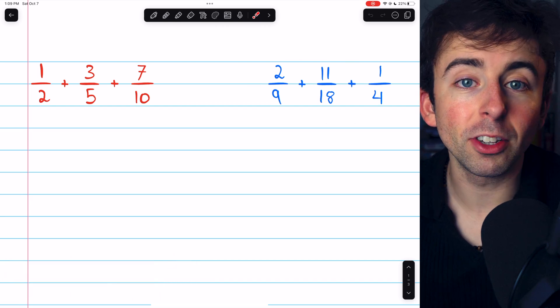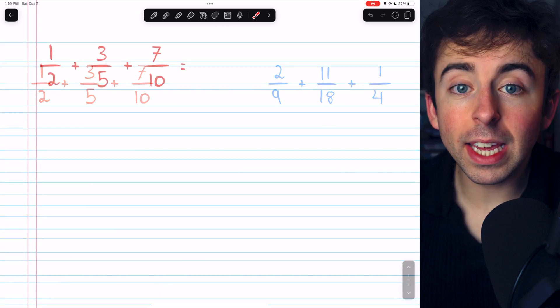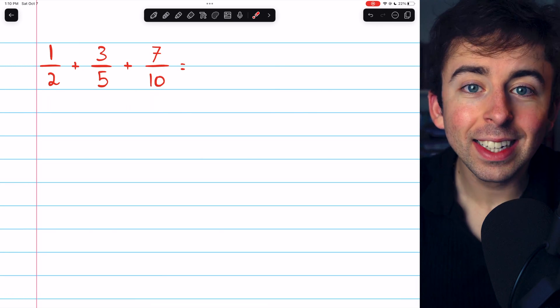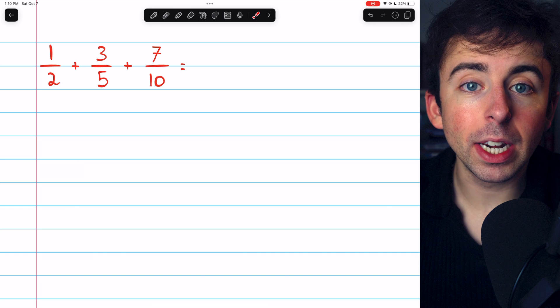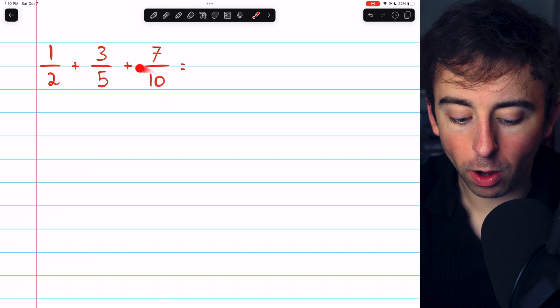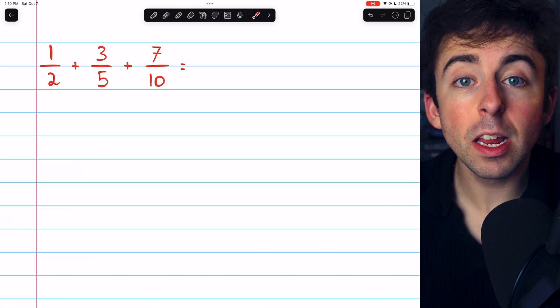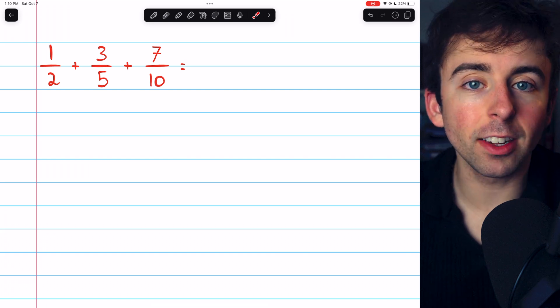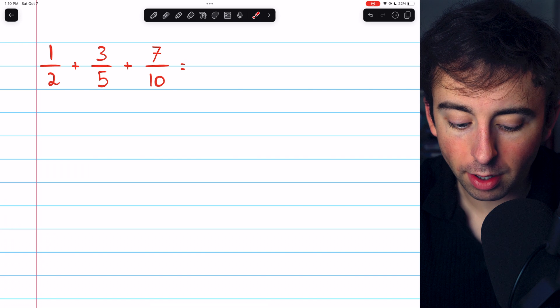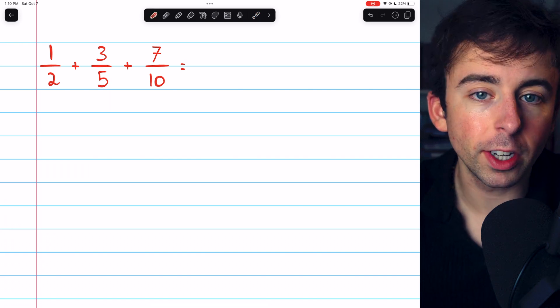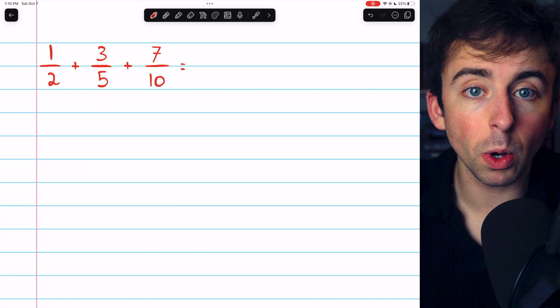In the second example, we'll have to change all of the denominators. Beginning with this first problem, to get common denominators, we need to find a common multiple of all of the denominators. Typically, we prefer the least common multiple, which can be found by listing multiples of all the denominators in question and then picking out the smallest one.